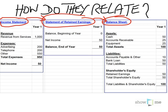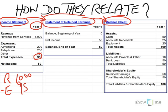Let's quickly define what an income statement is. An income statement is where you take all the revenues of the business for the year — in this example, year one, which is $1,000 — and from the revenue you subtract all the expenses. That's the $950 in advertising, telephone, and other expenses we've identified here. So whatever is left over is called net income or net profit. In this example, the $1,000 minus the $950 gives us a net income of $50.